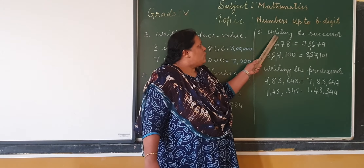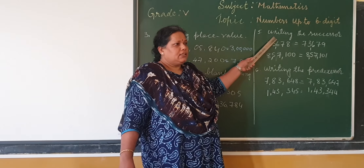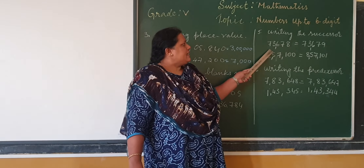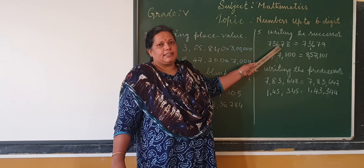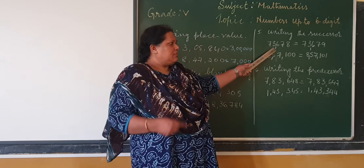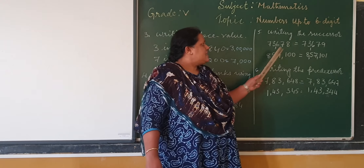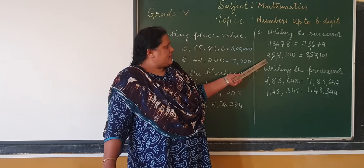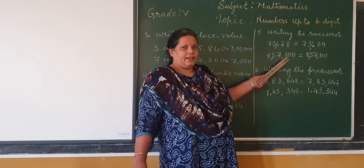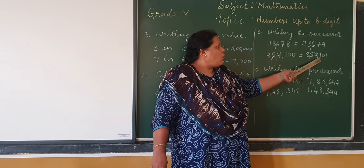And now, let's learn the successor. You will learn the successor means adding 1 to a number to get the next number. So we are given the number 73,678. By adding one to this number, we get 73,679. Similarly, one more example: we are given the number 8,57,100, and adding one number, it becomes 8,57,101.